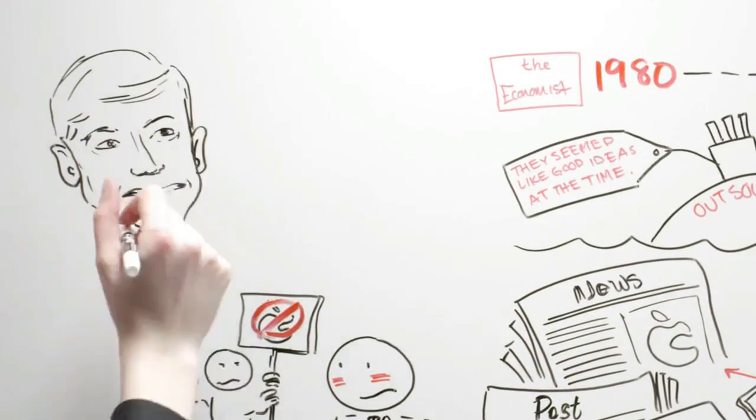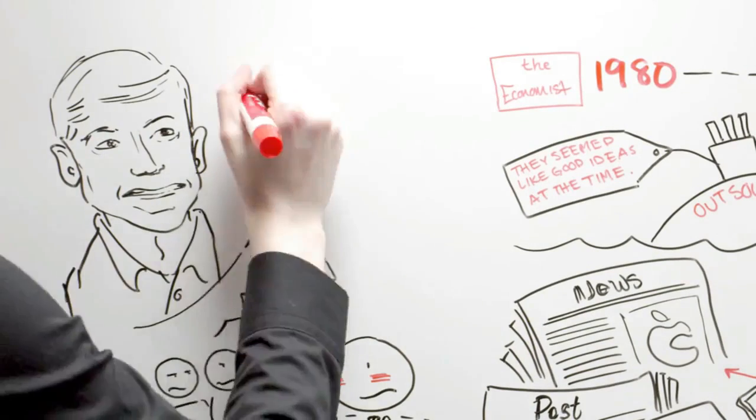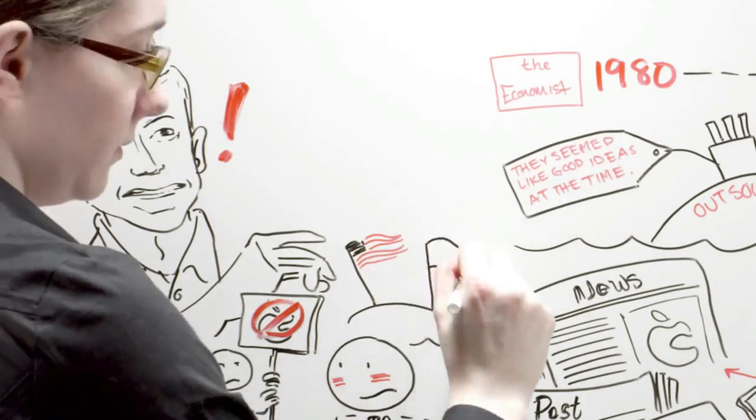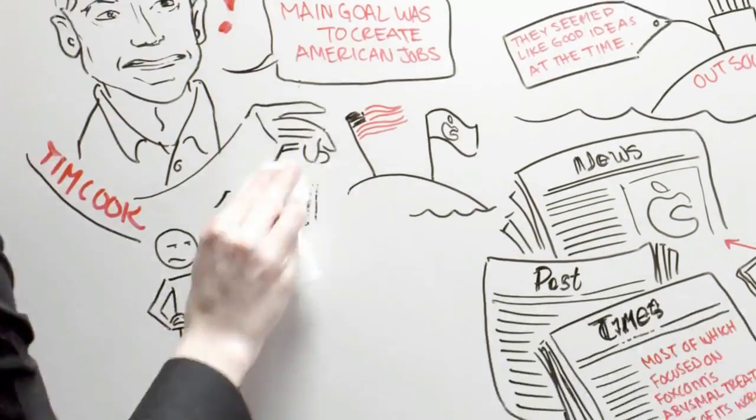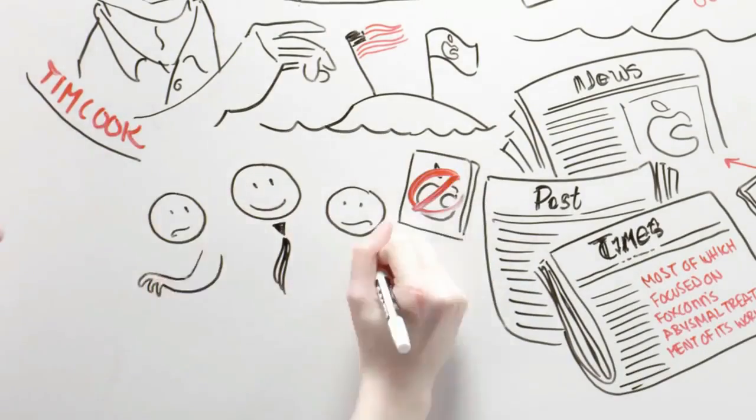Chief Executive Tim Cook ordered an investigation. In December, Cook announced that Apple would move the production of some Mac computers from China to America. Although Cook declared that the main goal was to create American jobs, it can also be seen as a gesture to placate critics of the Apple-Foxconn relationship.